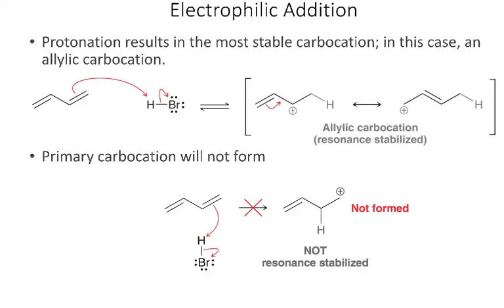This molecule is symmetric, so we come up with the same argument whether we're adding to this double bond or this double bond. When the hydrogen adds, it's going to go on the 1 position. That gives a carbocation, and even better than a tertiary carbocation — because of resonance, this carbocation is allylic. We won't see the case where the hydrogen ends up on the other end, because that gives a primary carbocation not stabilized by resonance.